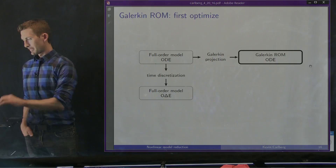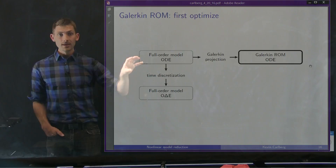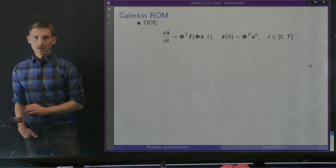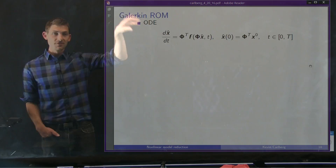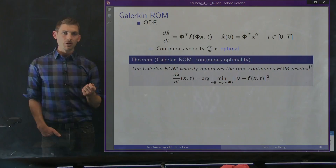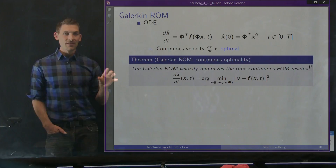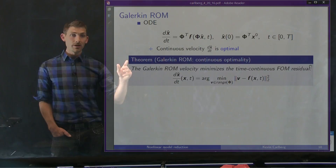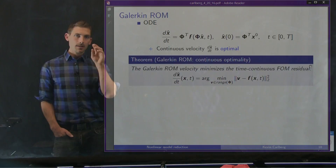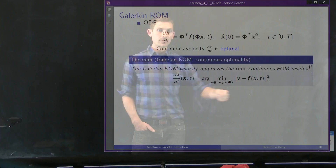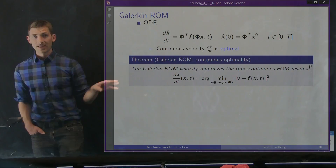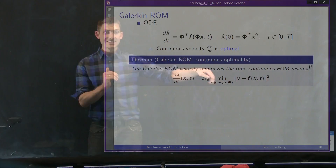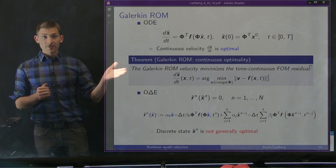Galerkin projection optimizes then discretizes. Starting with the full order model, it introduces an optimal projection and then discretizes. The Galerkin ROM ODE has the same form as the full order model but in reduced coordinates, and this associates with an optimality property: the continuous velocity dx̂/dt is optimal in the sense that the Galerkin ROM velocity minimizes the time-continuous full order model residual — that is, φᵀẋ̃ minus F — in the L² norm locally in time. This implies that as we enrich our basis φ, this notion of error will monotonically decrease. That's a really nice result.